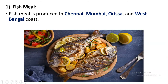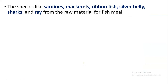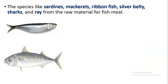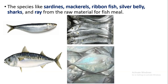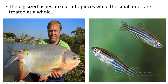Fish meal is produced in Chennai, Mumbai, Orissa, and West Bengal coastal regions. First the fish is cleaned, cooked, and dried so that it can be used as a food material. Undecomposed fish is used. A number of fish are used for fish meal like sardines, mackerels, ribbon fish, silver belly, shark, and rays. Some fishes which are very large in size are cut down, while small-sized fishes are used as a whole.